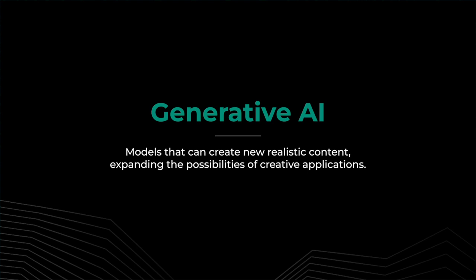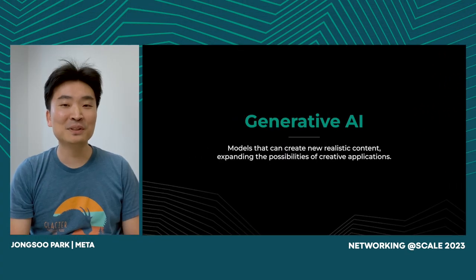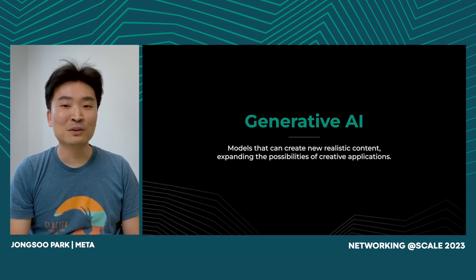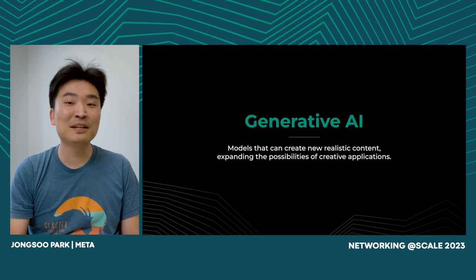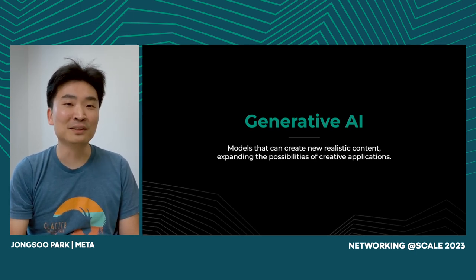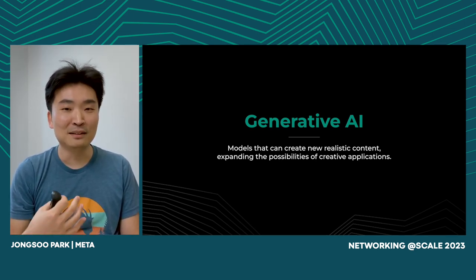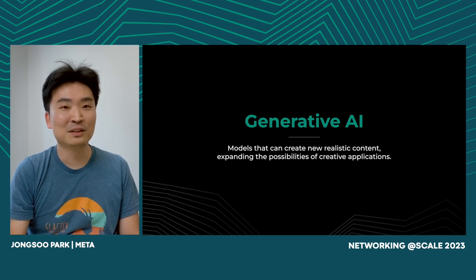Generative AI is one of the hottest topics these days. It's about creating and generating new and realistic content. Before generative models became popular, AI models were often used to understand existing information like image classification and segmentation. So generative AI is about generating new content versus understanding existing contents — that's the main difference.